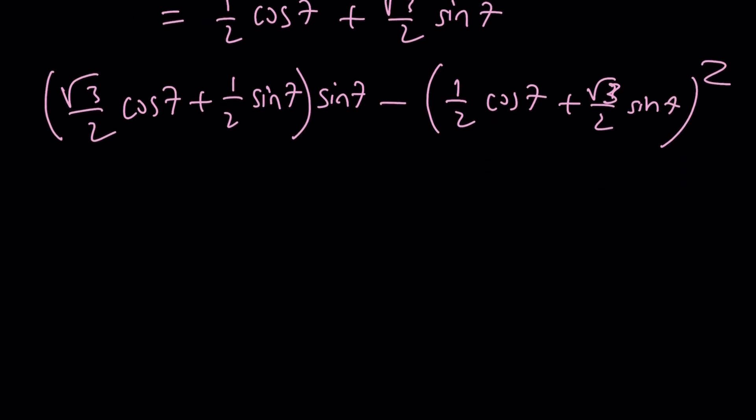Now, this is easy. You're just going to distribute root 3 over 2 cosine 7 sine 7 plus 1 half of sine of 7 squared or sine squared 7.